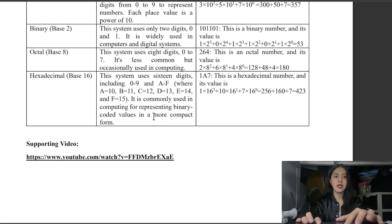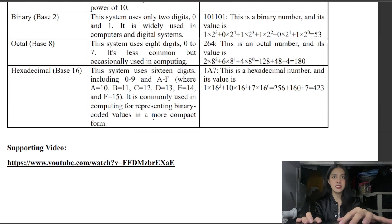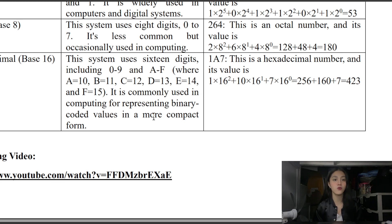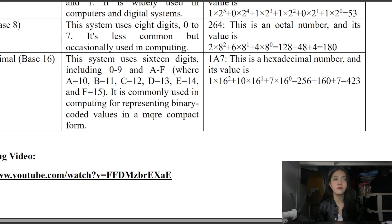Lastly, hexadecimal, which is base 16. This system uses 16 digits including 0 to 9 and A to F, where A equals 10, B equals 11, C equals 12, D equals 13, E equals 14, and F equals 15. It is commonly used in computing for representing binary data in a more compact form.